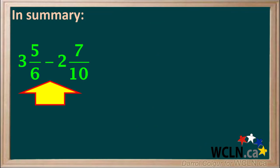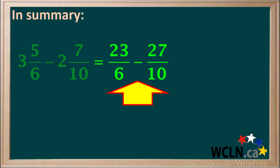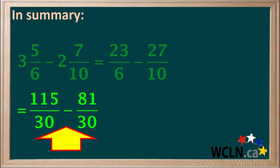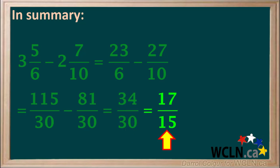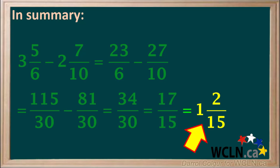To summarize this question, we were asked to subtract 2 and 7 tenths from 3 and 5 sixths. We start by converting these mixed numbers to the improper fractions 23 over 6 minus 27 over 10. Then we rewrite with the common denominator 30 to get 115 over 30 minus 81 over 30. Subtracting gives us 34 over 30, which reduces to 17 fifteenths, and finally we change to the mixed number 1 and 2 fifteenths — our final answer.